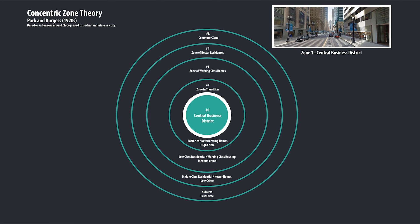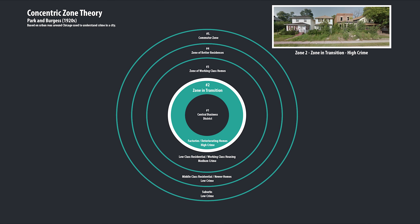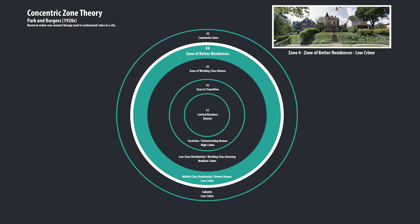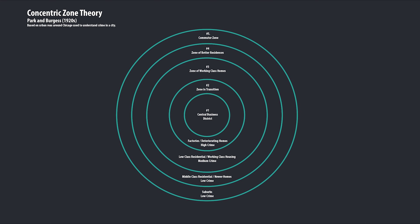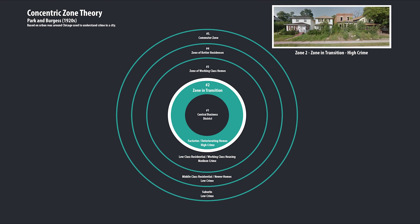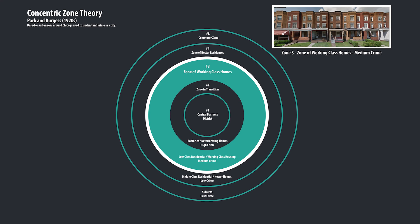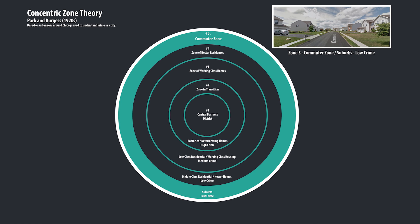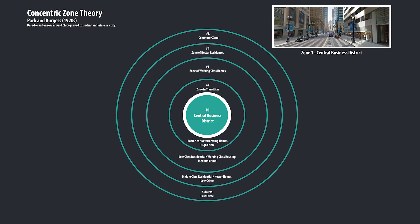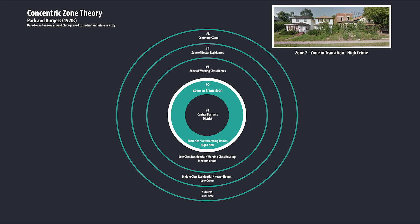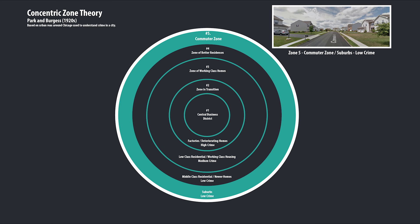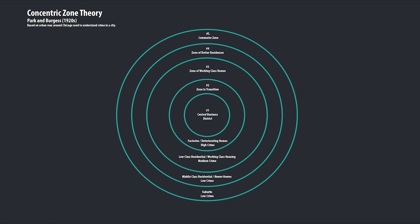The concentric zone theory in criminology basically says that downtowns weren't that bad, but right outside of downtown was a bunch of slums and factories, so crime was really bad there. But once you started moving further and further away from the city — zone three, zone four, zone five — crime kept going down. That's all it means.